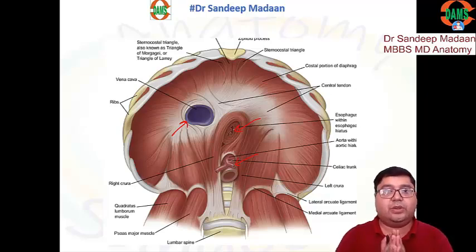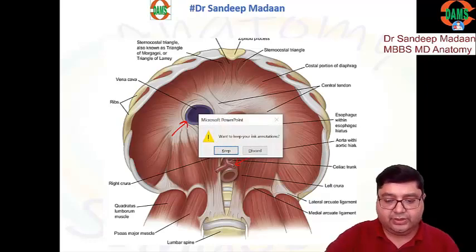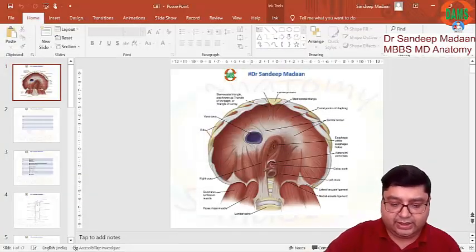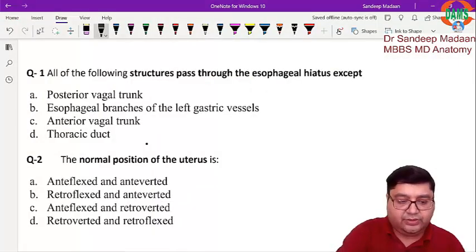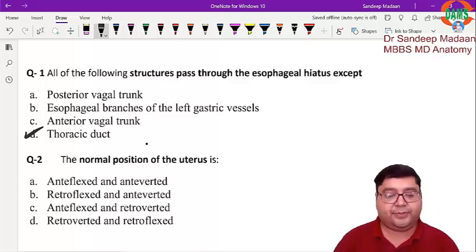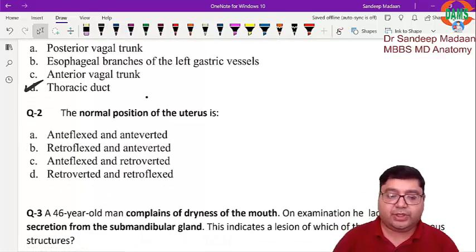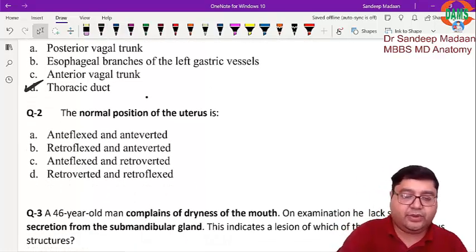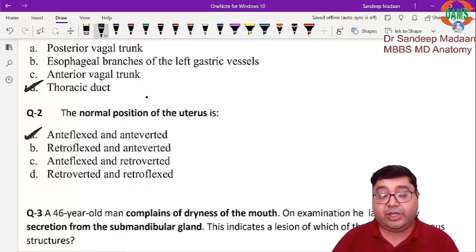From the aortic opening, the aorta, thoracic duct, and azygous vein pass. The answer to this question is thoracic duct, because the thoracic duct passes through the aortic opening, not through the esophageal hiatus.